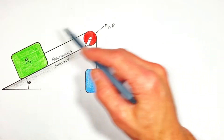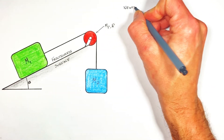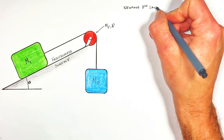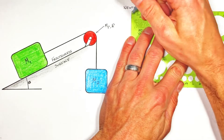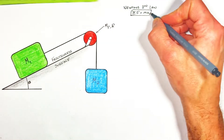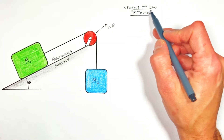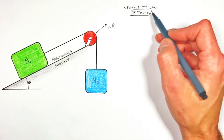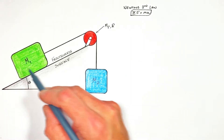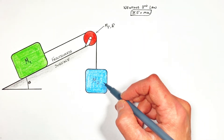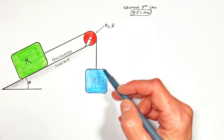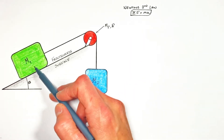This entire problem is centered around Newton's second law. So the first thing we're going to do is apply Newton's second law to each of these blocks, and of course that means we get to draw a free body diagram.